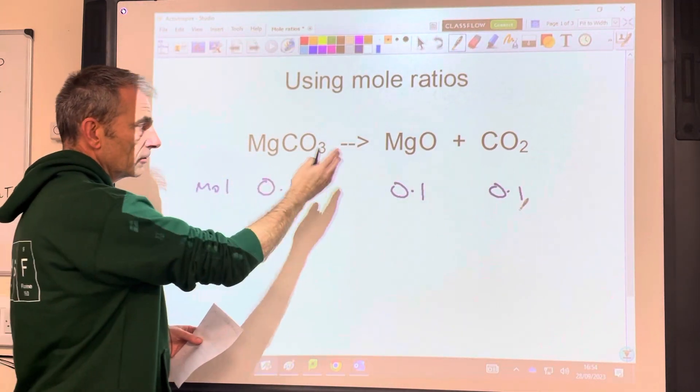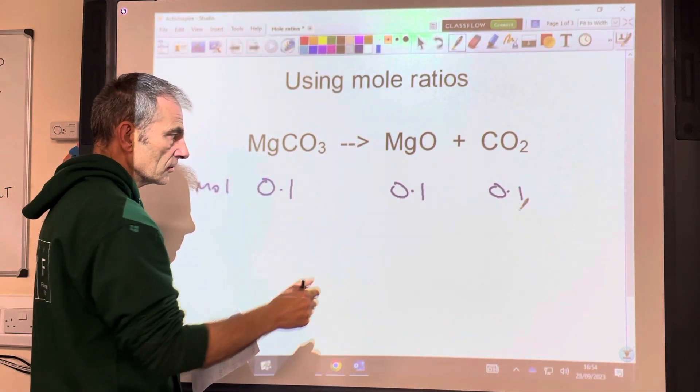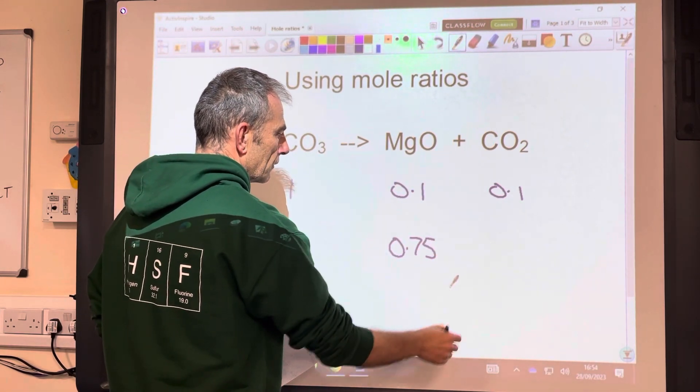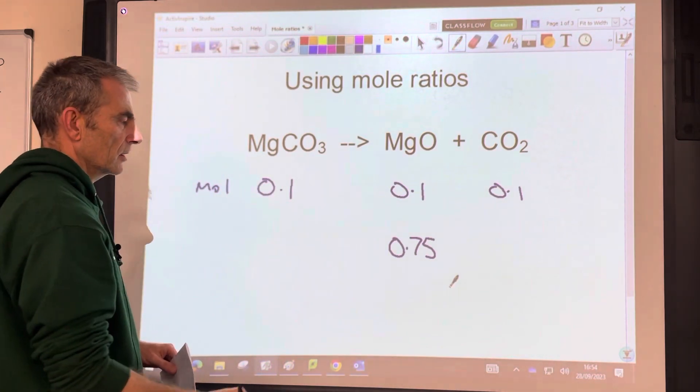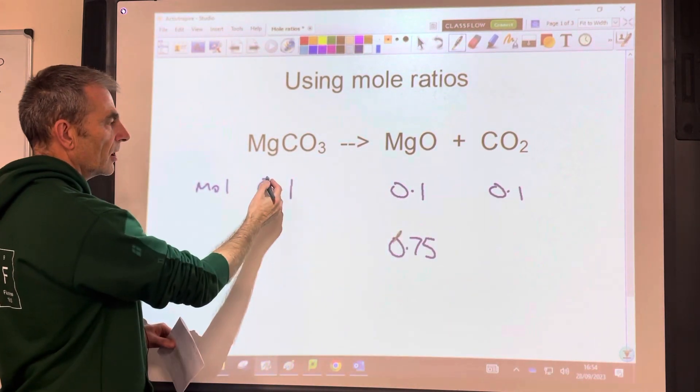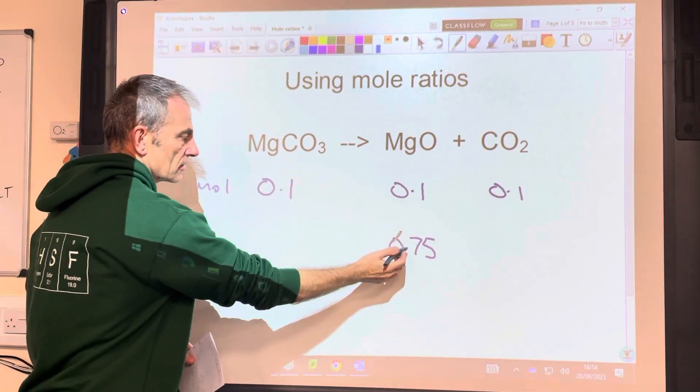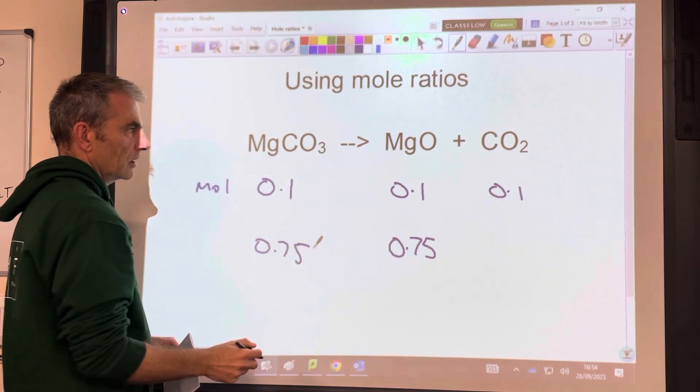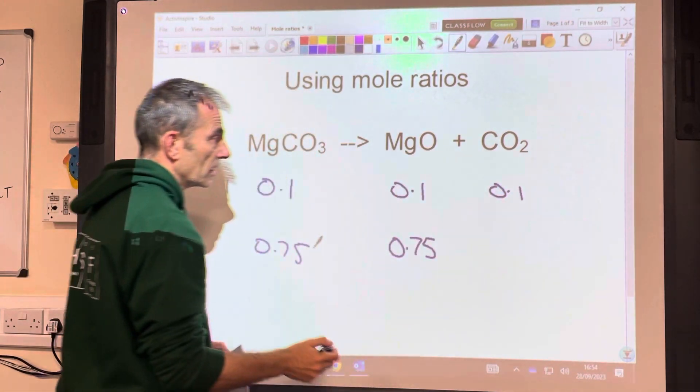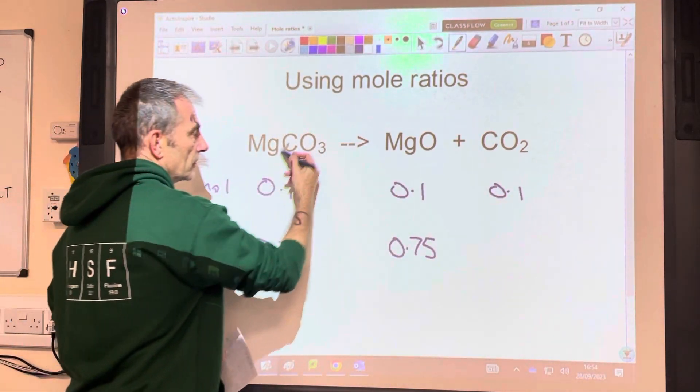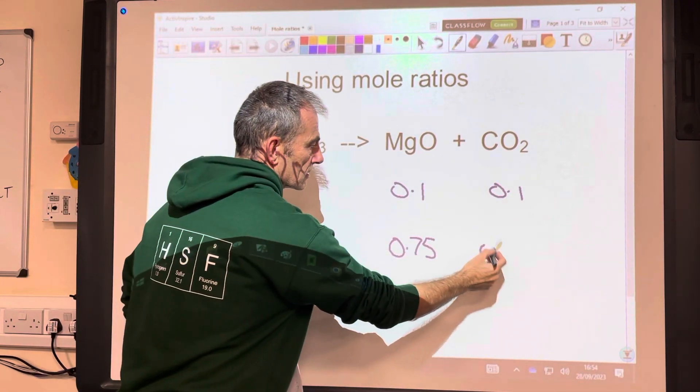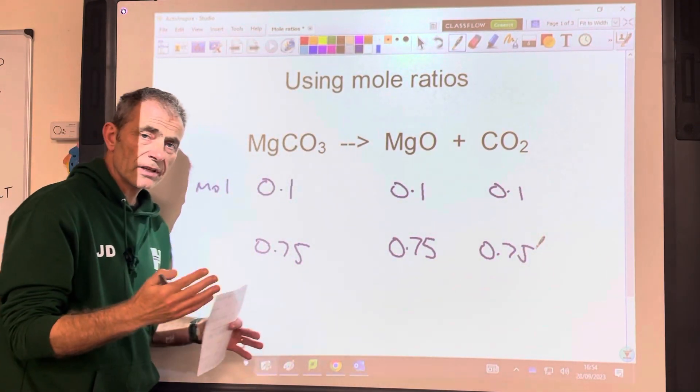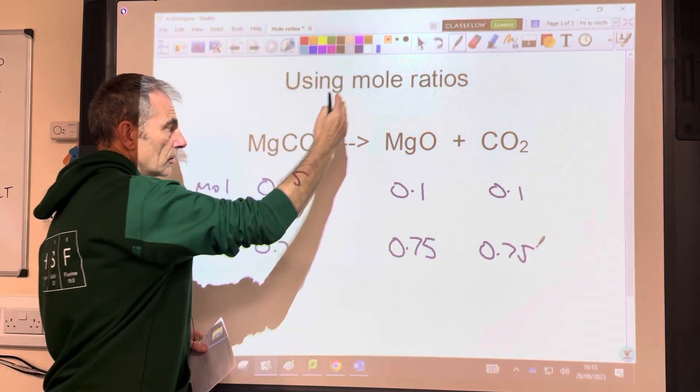Now we're going to apply the mole ratio backwards. So let's start with magnesium oxide. Let's suppose we wanted to make 0.75 moles of that. So how many moles of magnesium carbonate are we going to need? Well, it's going to be the same because of the ratio 1 to 1, 0.75. And then how many moles of CO2 could we make? Well, we could apply the ratio going from here to here if you want. But it's going to be 0.75 as well. So that's a really easy one because it's all 1 to 1 ratios.